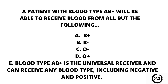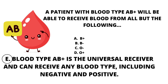Question number 26. A patient with blood type AB positive will be able to receive blood from all but the following: B positive, B negative, O negative, O positive. Or blood type AB positive is the universal receiver and can receive any blood type including negative and positive. Our answer here is E. Blood type AB positive is the universal receiver and can receive any blood type including negative and positive.